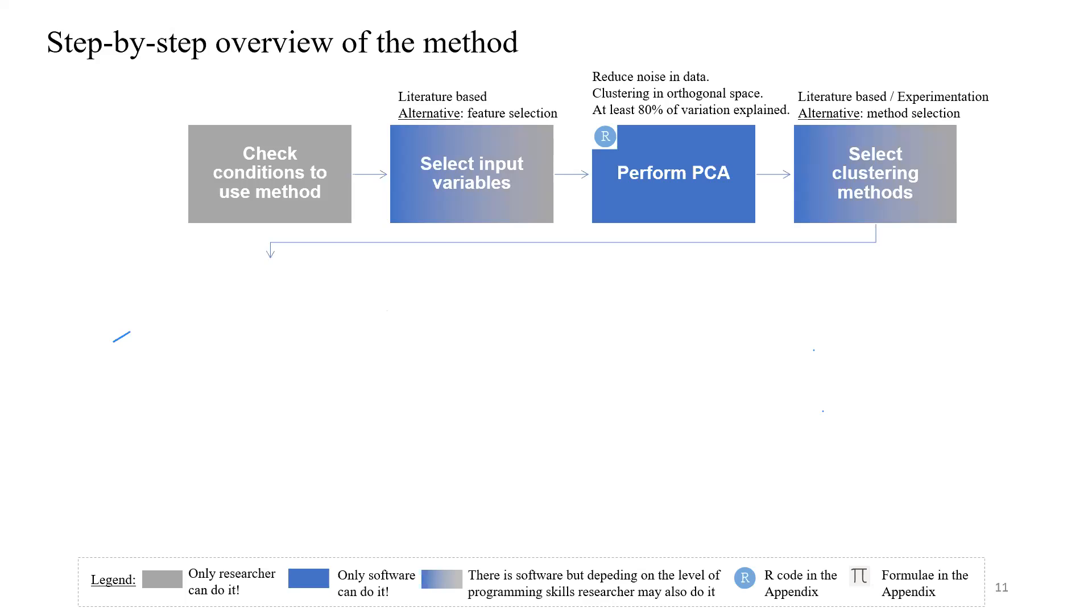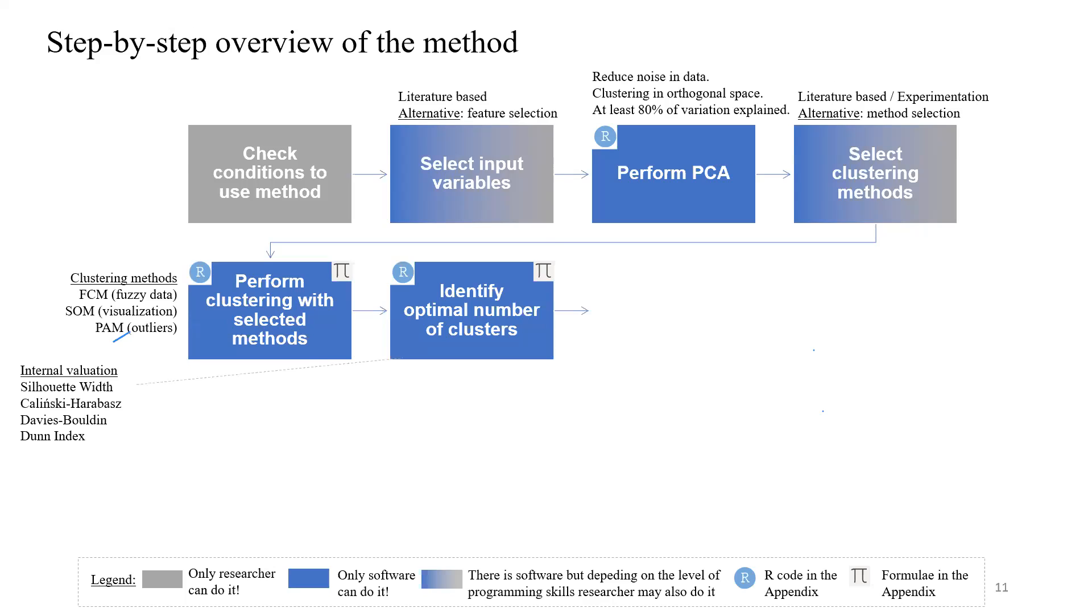Then we have to select the clustering methods. We've covered this extensively - the three methods I've explained. We identified these methods based on literature and experimentation, but there are also ways of selecting the method automatically based on software. Then we perform clustering using R. The R code will be made available with the presentation. Then we identify the optimal number of clusters based on the internal valuation criteria I've mentioned - the four criteria.